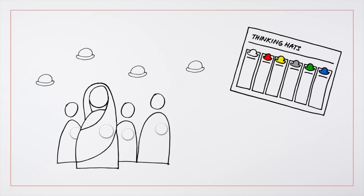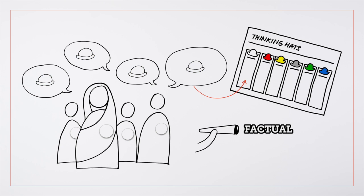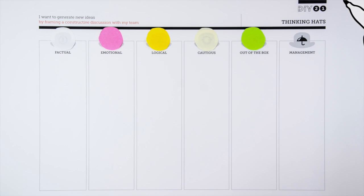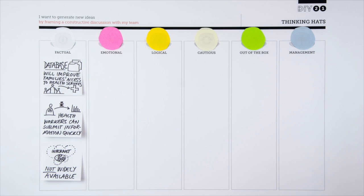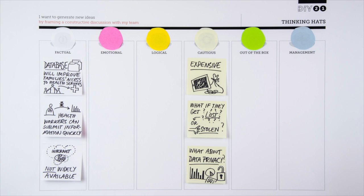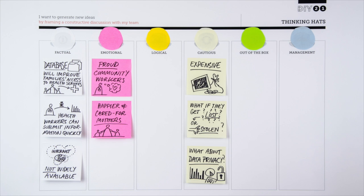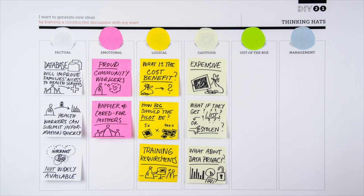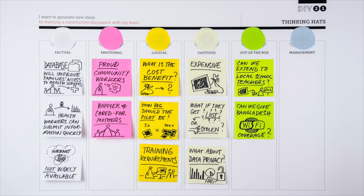They begin by exploring the facts. All the team members contribute to the discussion from that point of view. The group then adopts a cautious perspective. They continue to explore the idea from all viewpoints and can see a wide range of perspectives that will help them to shape and strengthen the idea.